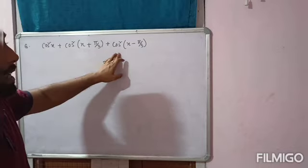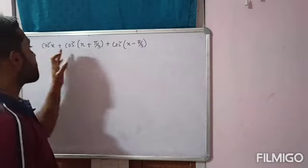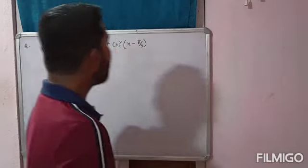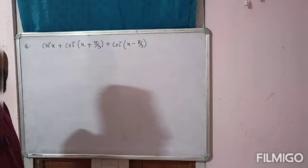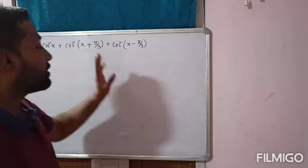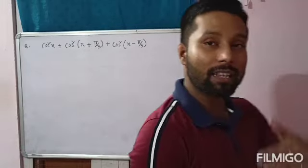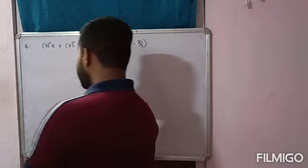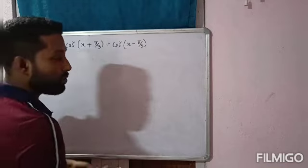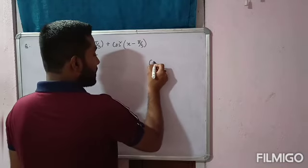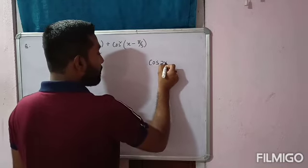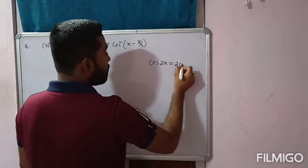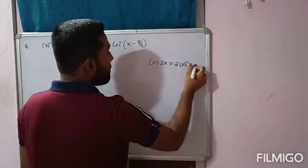Actually, here there are 3 terms. In all 3 terms there is cos squared — cos²x, cos²x, cos²x. There is no other kind of term; the difference is only in the angles. The angles are different but the term is the same — cos squared. So if the term is the same, we can think about the cos 2x formula in terms of cos.